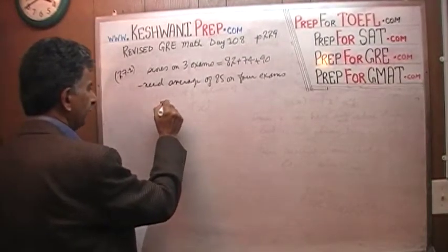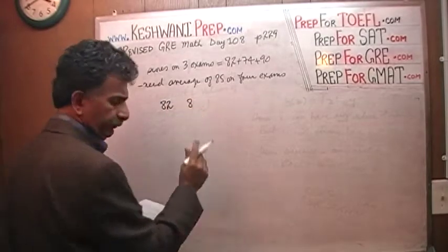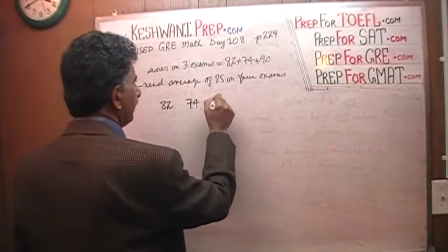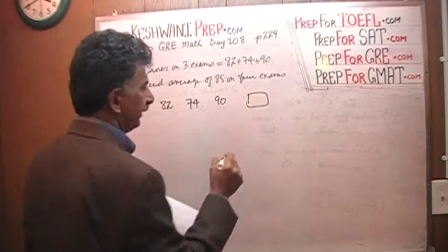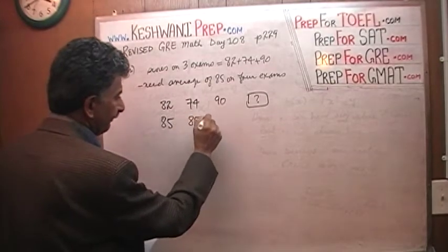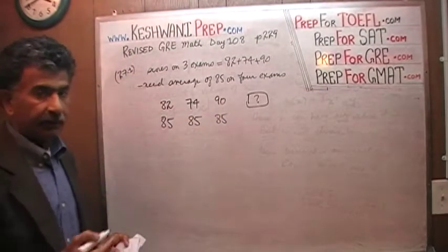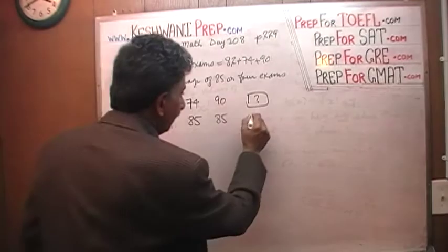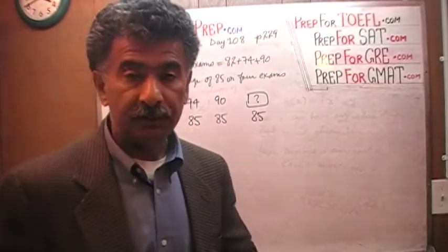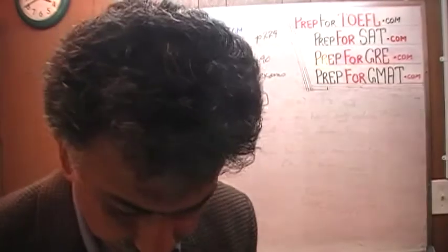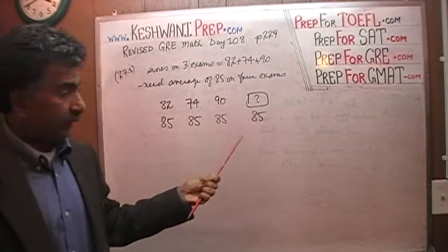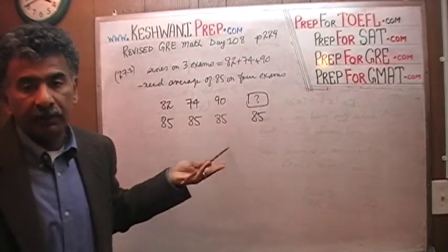We have 82, we have 74, we have 90 and here is the box there that is the unknown. Now, if this person had scored 85 on the first exam, 85 on the second exam, 85 on the third exam, then in order to get the average of 85 on all four exams, I can't tell from the name whether it's a guy or a girl, Elaine, I believe it's Ellen, she would have had the average of 85, which is very straightforward.